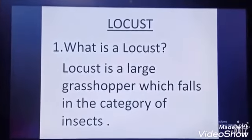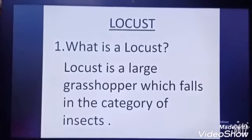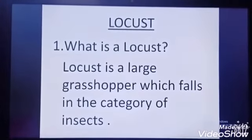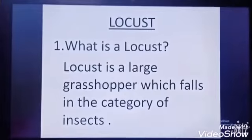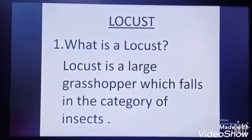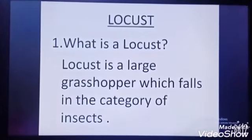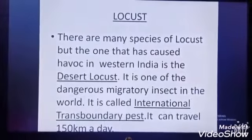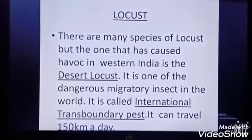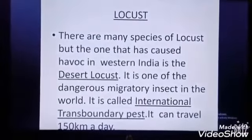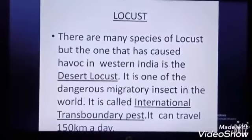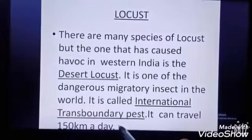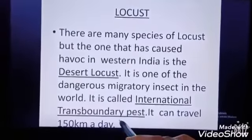Locust is a large grasshopper; it falls in the category of insects. There are 10,000 species of grasshoppers in the world, found in the tropical and subtropical region except Antarctica. But the one that has caused havoc is the desert locust. It is one of the most dangerous migratory insects, hence it is called an International Transboundary Pest — pest means insect, transboundary means moving across nations' borders.